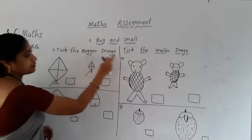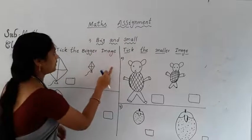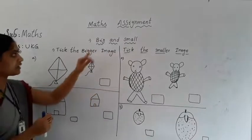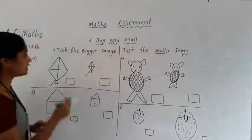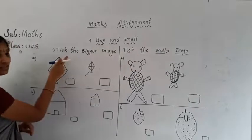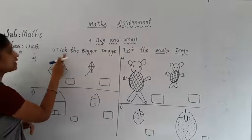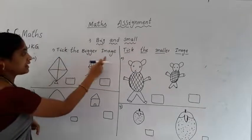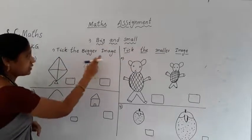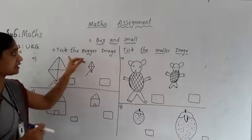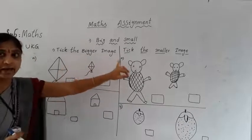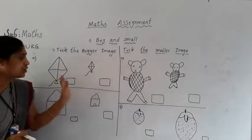This is your math assignment. The topic is big and small. See here, what is the first question? Tick the bigger image. This is the question. Tick the bigger image.